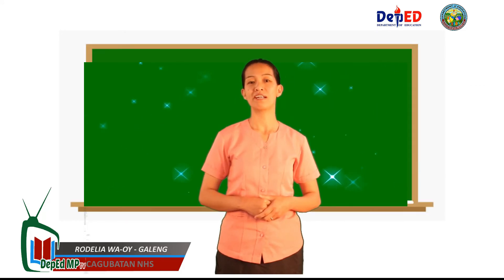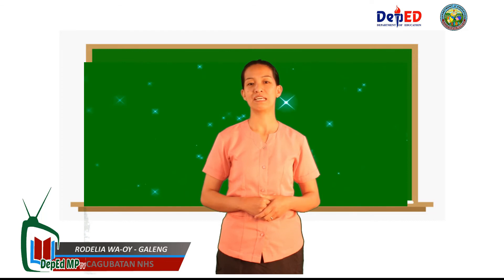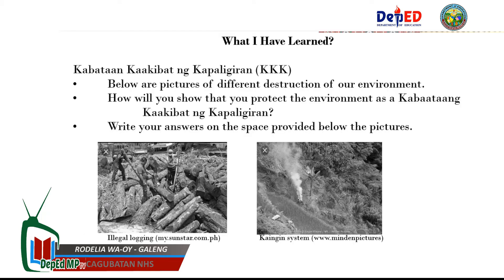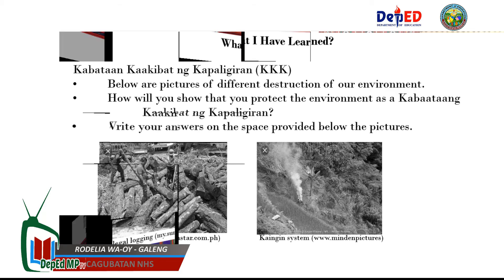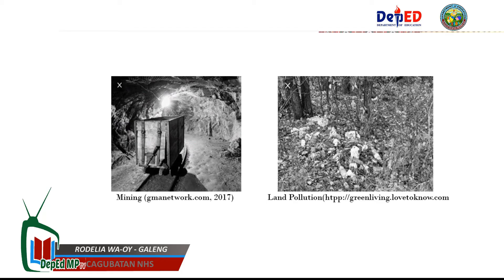To apply what we have learned, let's do this activity: Kabataan Kaakibat ng Kapaligiran, or KKK. Below are pictures of different destructions of our environment. How will you show that you protect the environment as a Kabataan Kaakibat ng Kapaligiran? Write your answers on the space provided below the pictures. The environmental destructions shown include: illegal logging, kaingin system, mining, and land pollution.